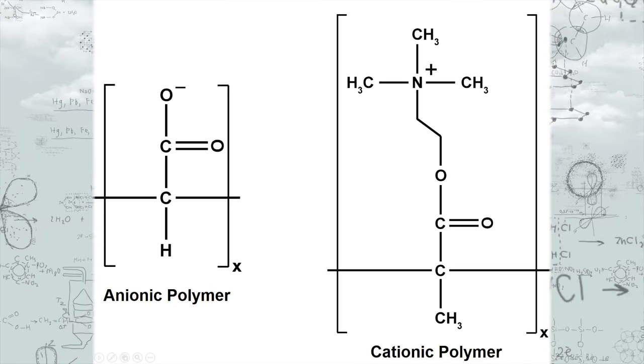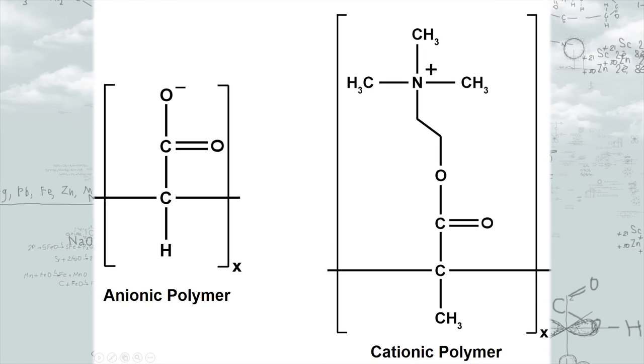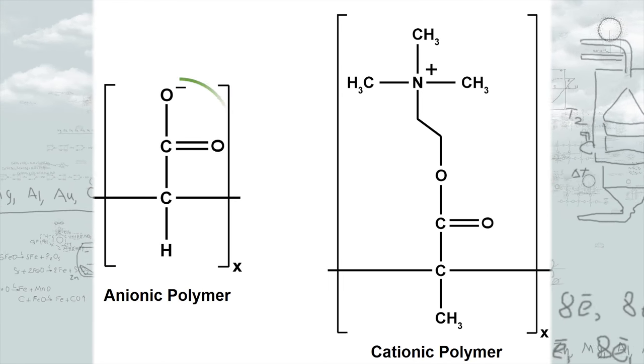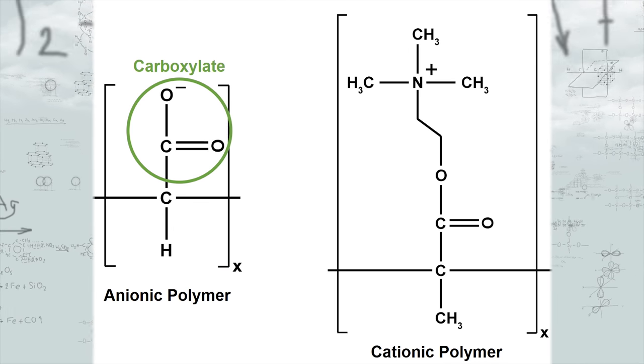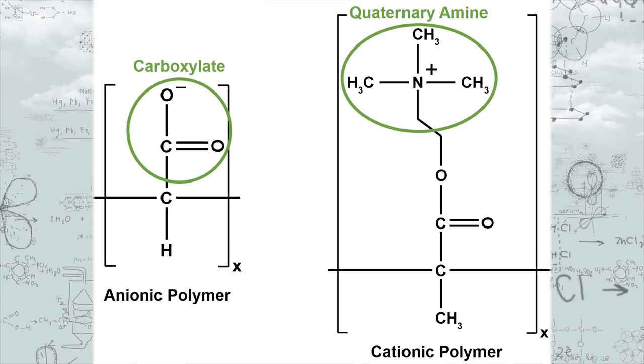Polymers that undergo the alkali-swellable emulsion, or ACE mechanism, are ionic thickeners. They contain functionalities that are anionic, such as carboxylate, or cationic, such as quaternary amine. These polymers can either undergo swelling on their own, in the case of cationic polymers that contain fixed positive charges, or require triggering via neutralization.